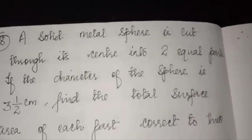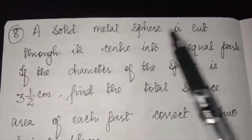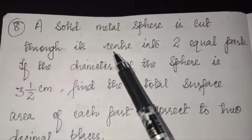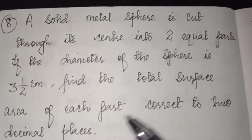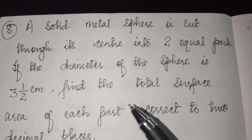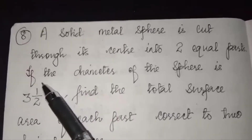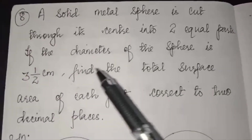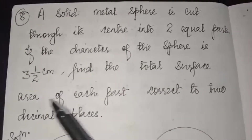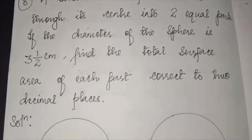Next, question number 8: a solid metal sphere is cut through its center into two equal parts. When you cut the sphere through its center you get two identical hemispheres. If the diameter of the sphere is 3½ centimeters, find the total surface area of each part correct to two decimal places.